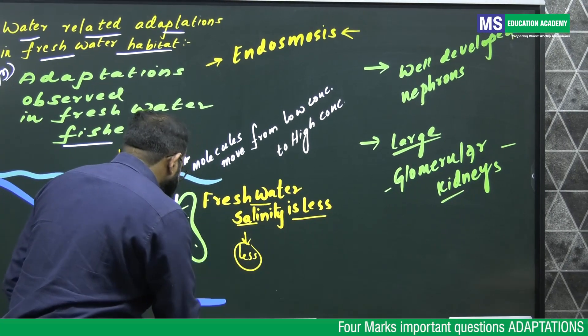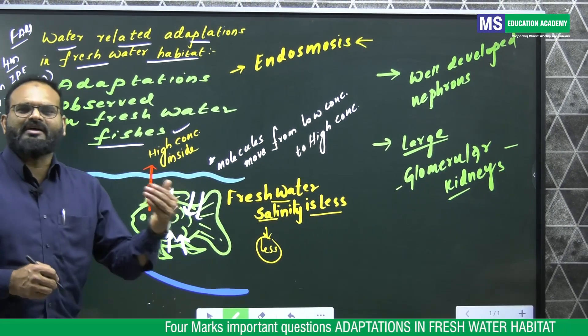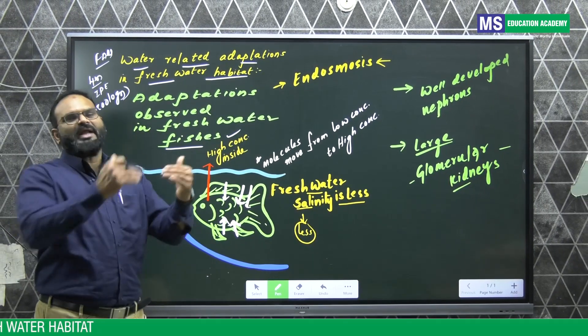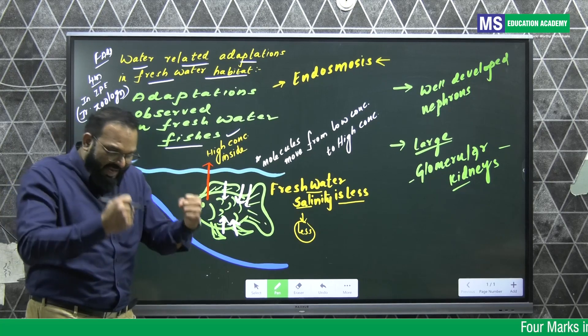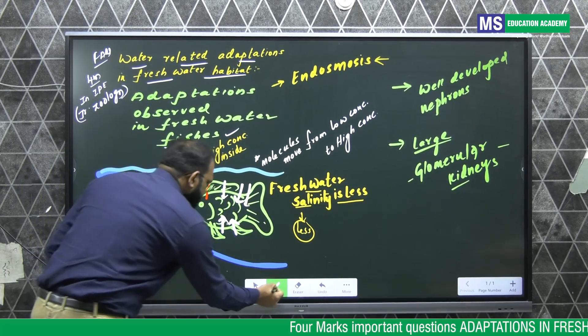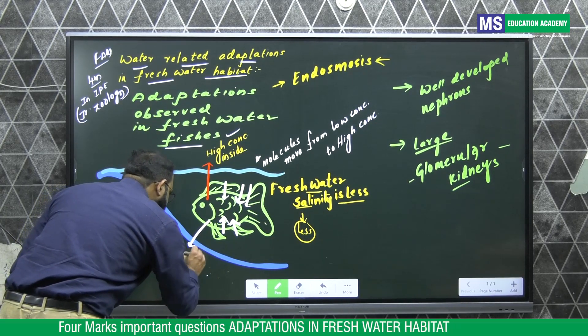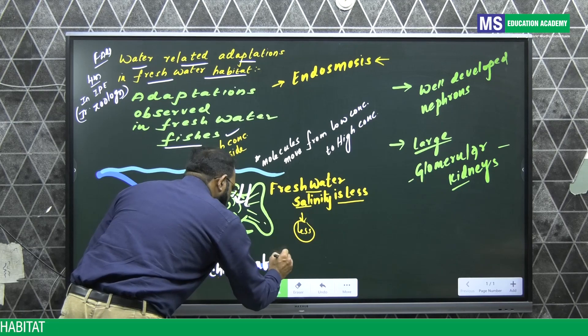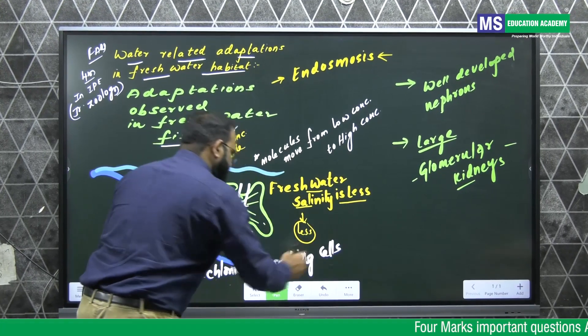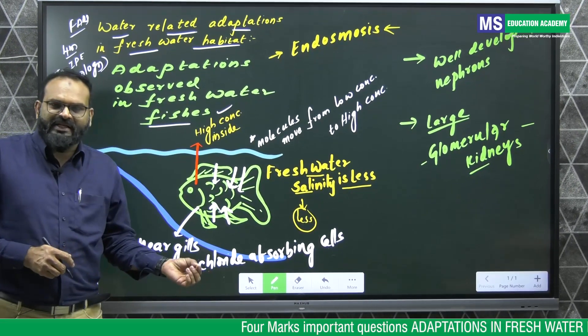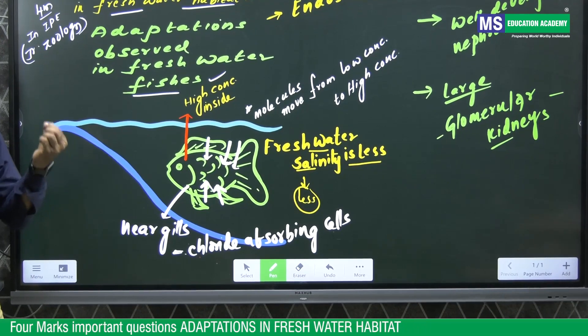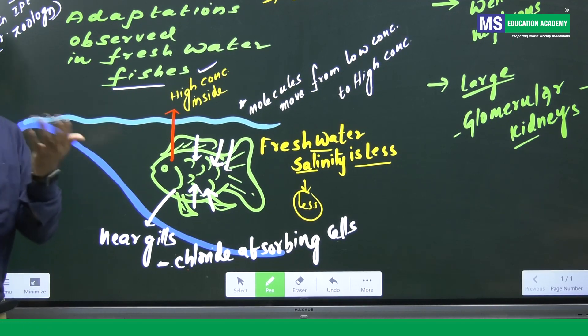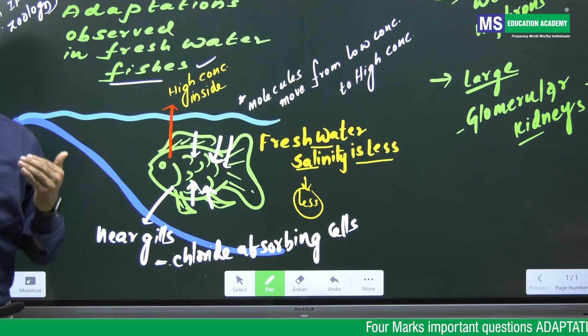When this fish is losing salts from the body, to compensate and maintain its body's metabolic activities it requires some salts. Near the gills of these fishes, chloride absorbing cells are present. These chloride absorbing cells absorb salts from the habitat, from the water bodies, so that it can compensate the loss of salts to maintain osmoregulation or homeostasis.